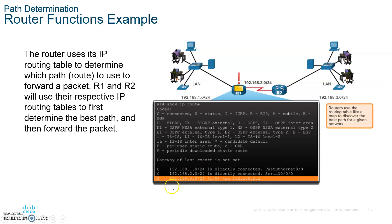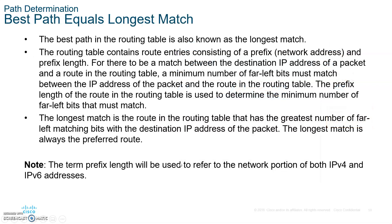In the next chapter we'll talk about default routes — so in case there is no match, we send the packet somewhere else to a different router, and that means we're going to set the gateway of last resort.